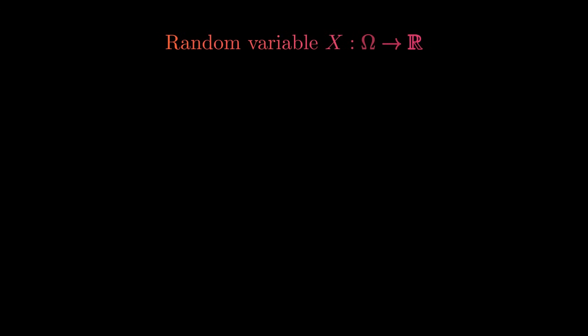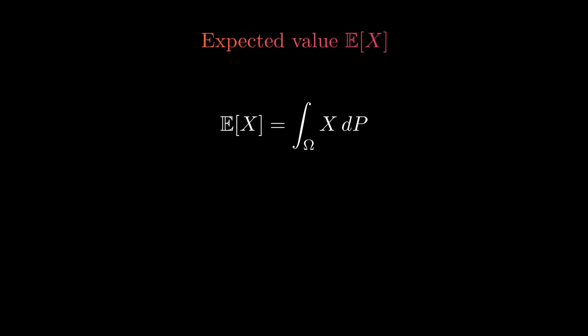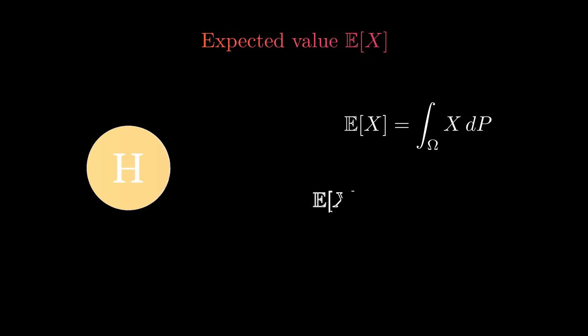A random variable can be interpreted as a measurable function from the sample space to the real numbers. On the coin flipping space, we can define a random variable by assigning one to tails and minus one to heads, which may describe a situation where you get one dollar when you get tails and lose one dollar if you get heads. The expected value of a random variable can also be described by measure theory — it is the integral of the random variable over the sample space with respect to the probability measure. For the coin flipping space, this is just the sum of the values of the random variable times the respective probability. For the random variable we just looked at, the expected value would thus be zero, just as we would expect.